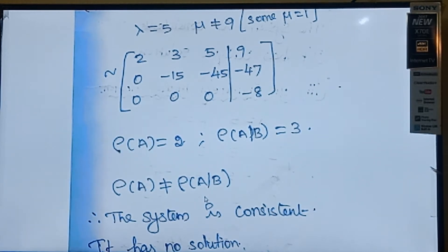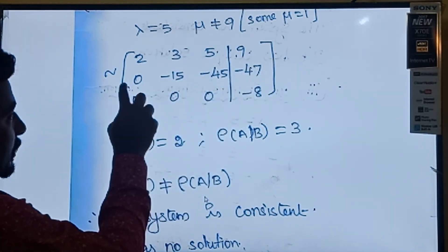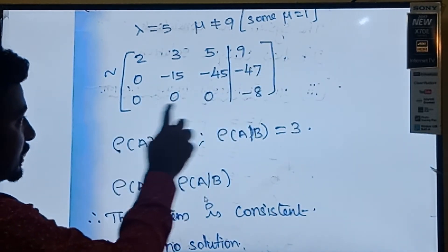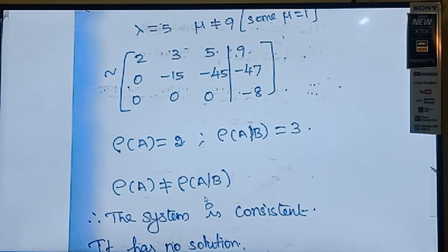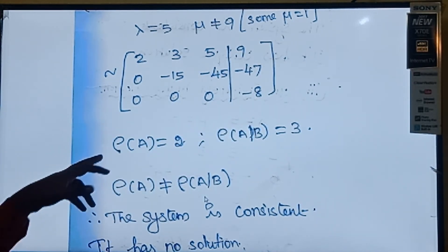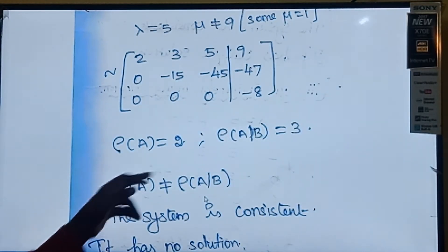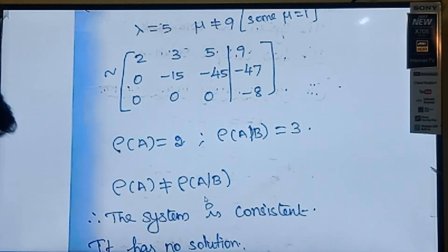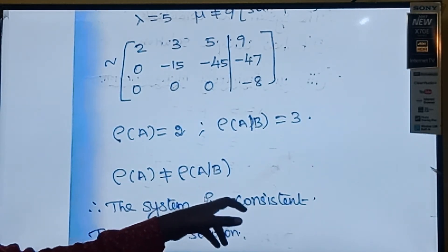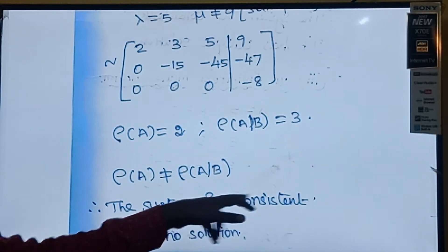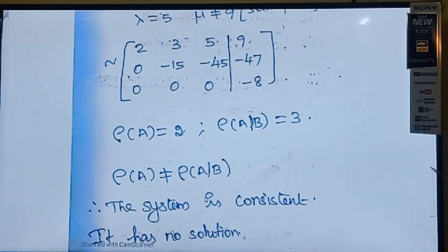For the augmented matrix A|B: row 1 is non-zero, row 2 is non-zero, and row 3 has a non-zero element (-8), so rank of A|B = 3. Since rank of A ≠ rank of A|B, the system is inconsistent — it has no solution.